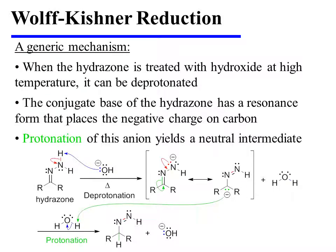When the hydrazone is treated with hydroxide at high temperature, it can be deprotonated. Hydroxide removes one of the protons from the terminal nitrogen, pushing electron density onto that nitrogen. The conjugate base of the hydrazine also has a resonance form that places the negative charge on carbon, and it is the protonation of this anion that yields a neutral intermediate.